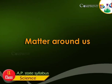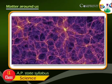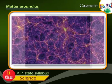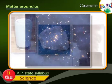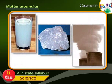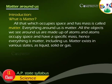Matter around us — what is matter? All that which occupies space and has mass is called matter. Everything around us is matter. All the objects we see around us are made up of atoms, and atoms occupy space and have a specific mass. Hence, everything is matter, including us.